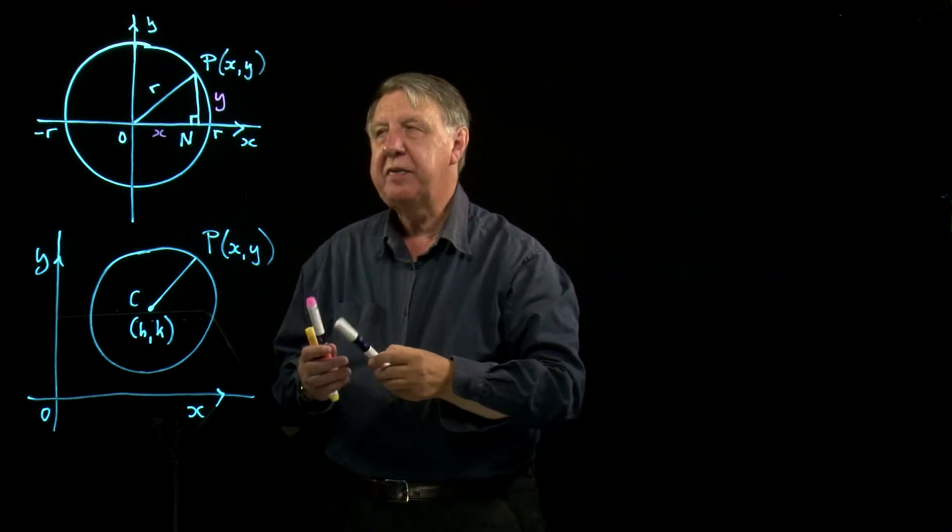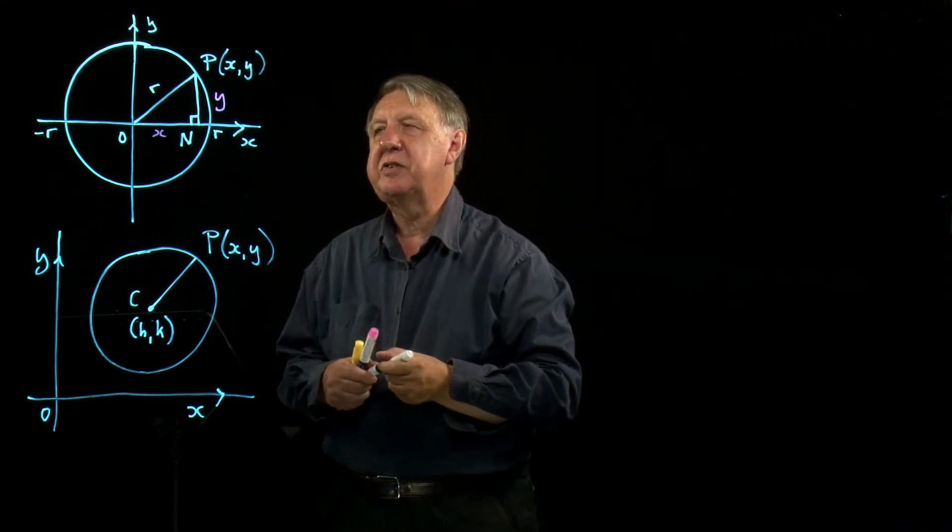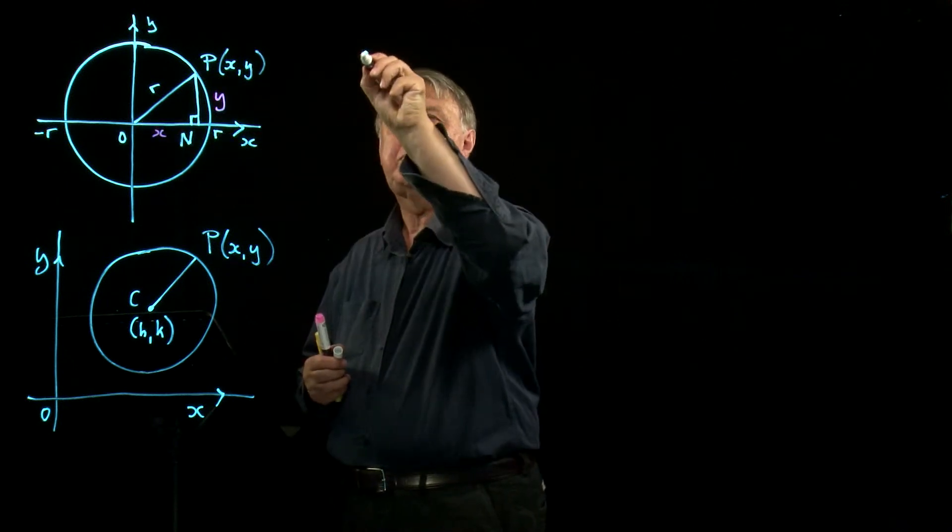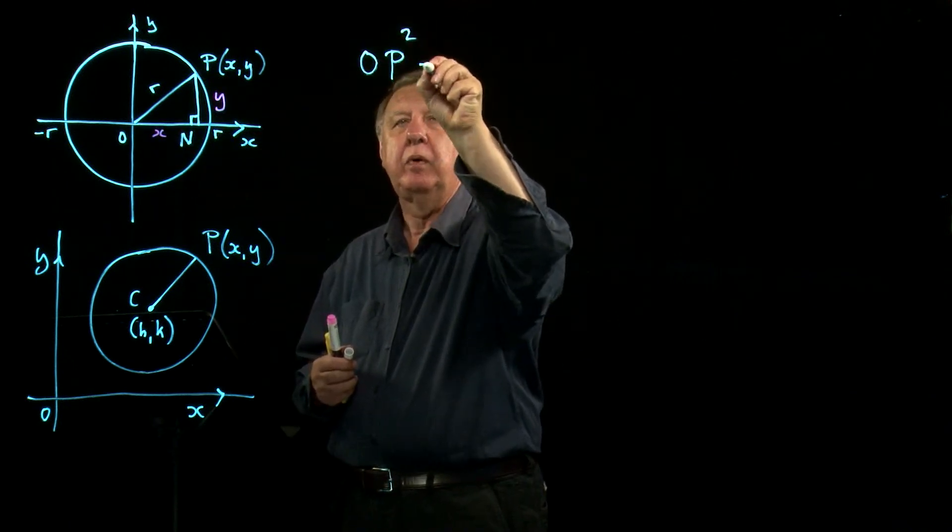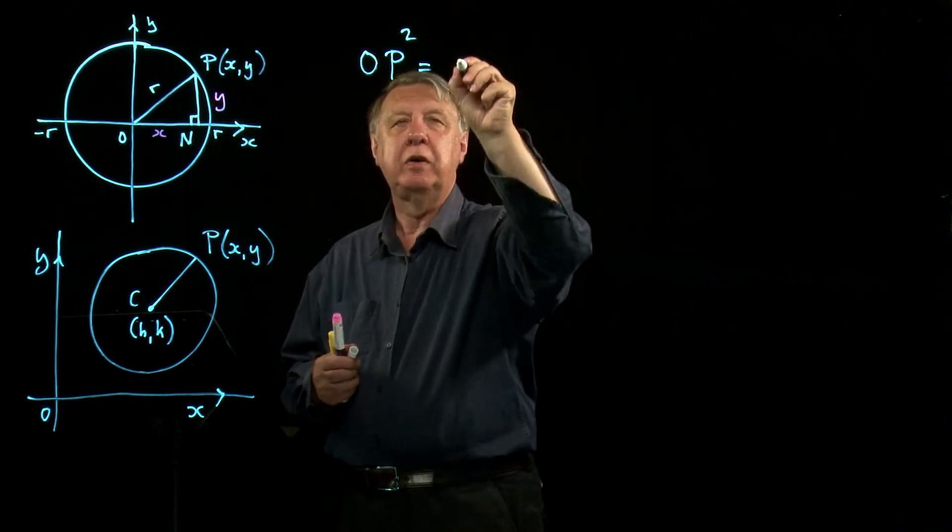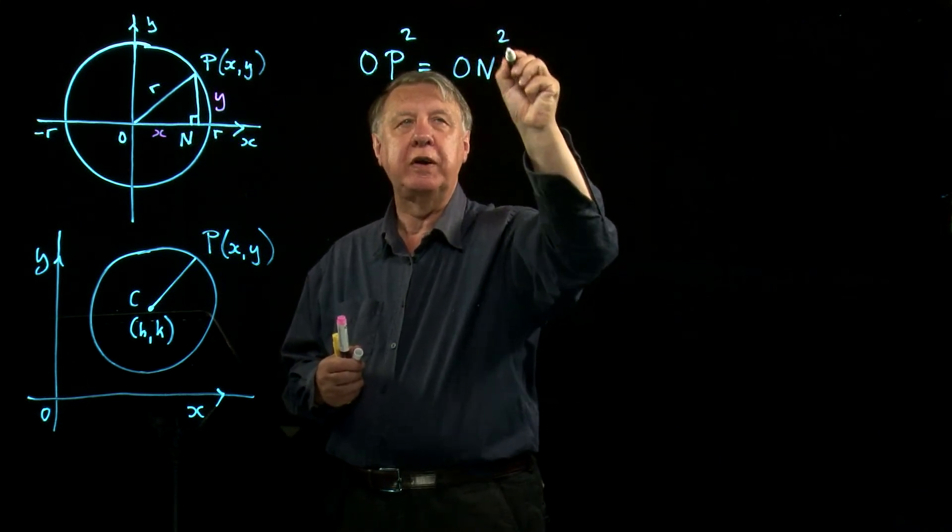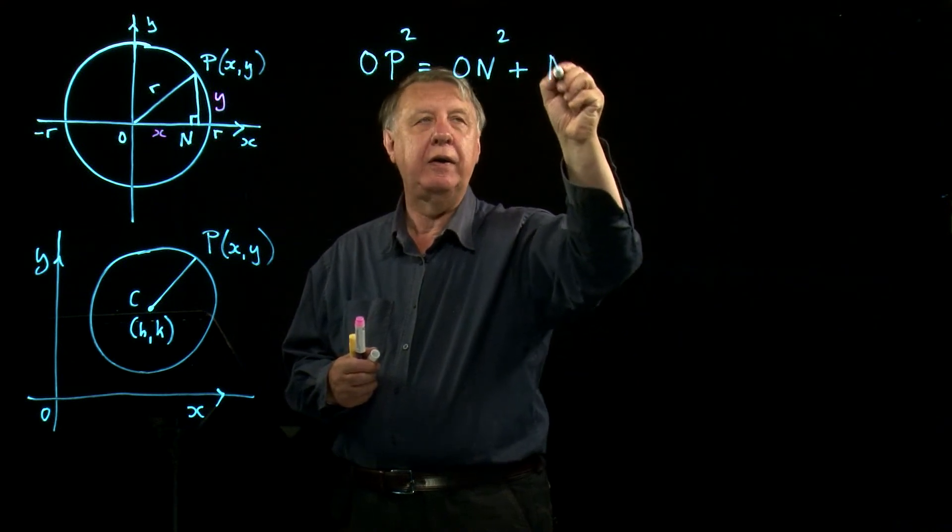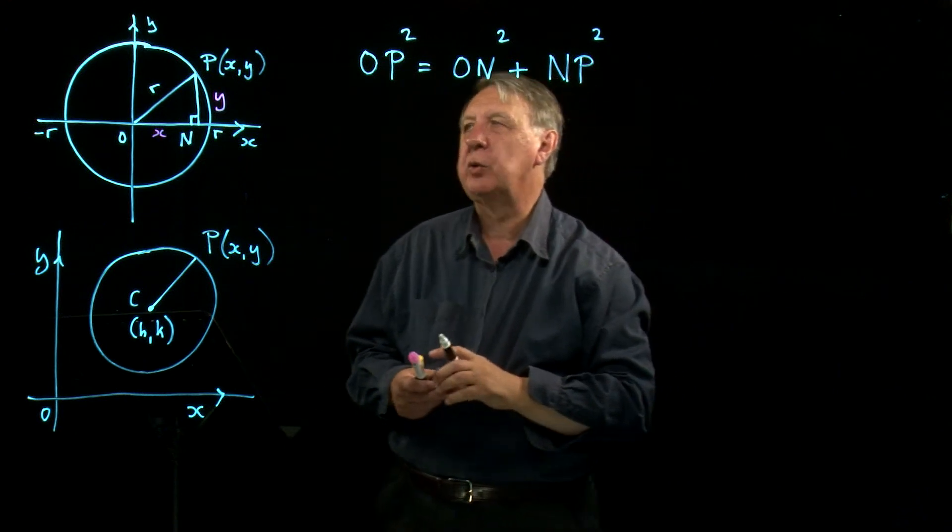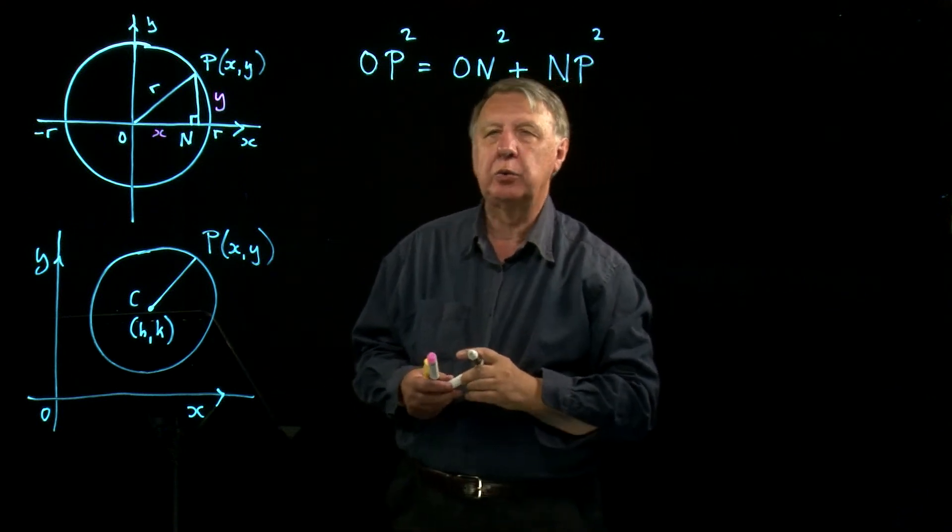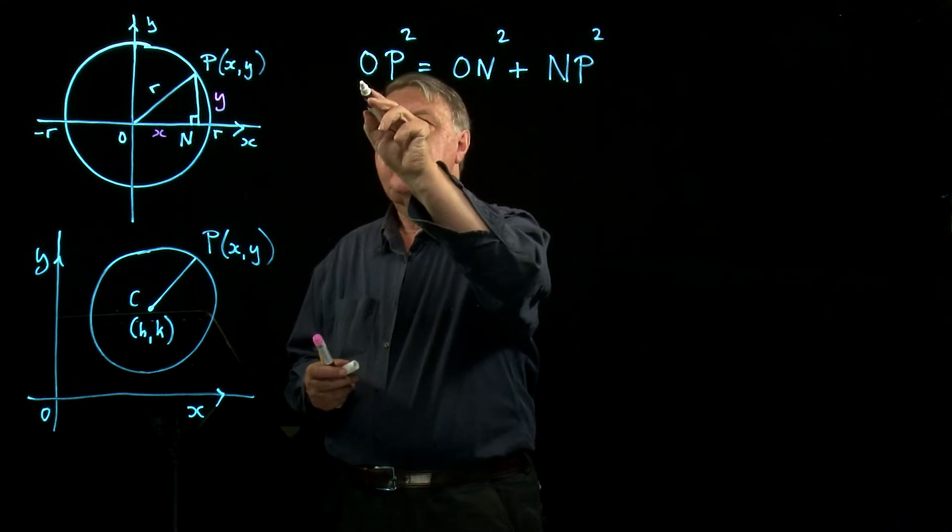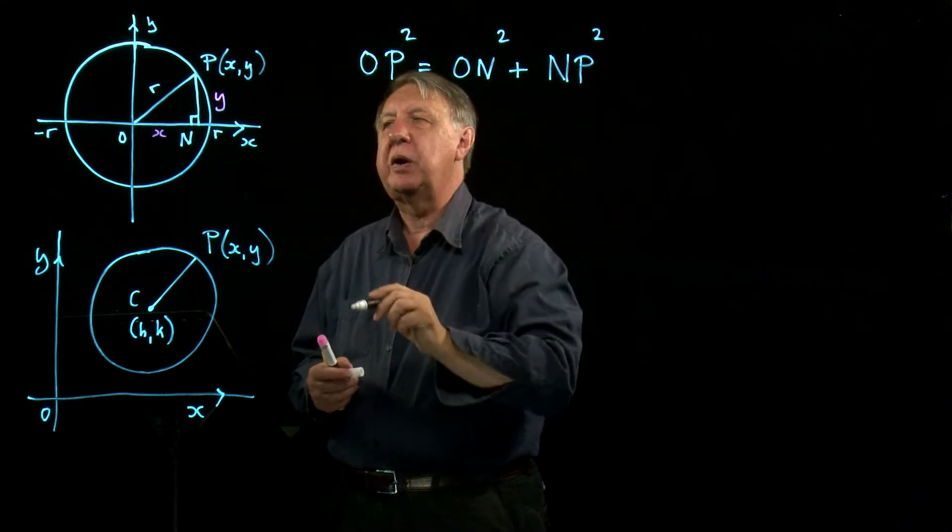So Pythagoras' theorem tells me that in this right angle triangle, OP squared is always equal to the sum of the squares of the other two sides, that's ON and NP. That's a basic statement of Pythagoras' theorem.